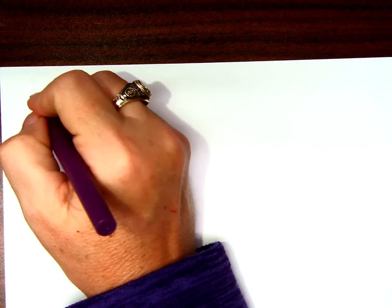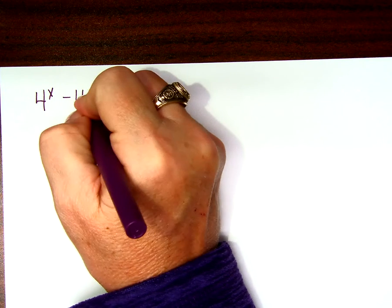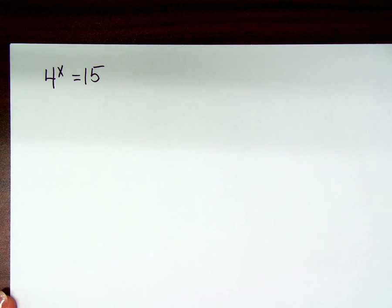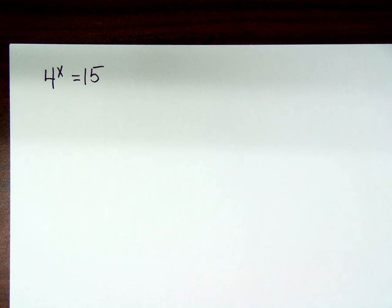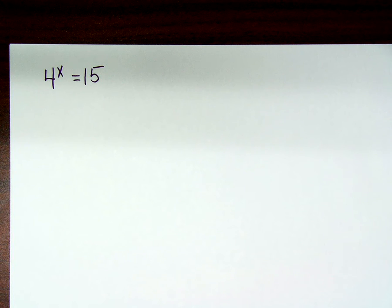Now we have equations like this: 4 to the x power equals 15. It starts to look like the problems we just did, except can I really make 15 be 4 to some power, or 2 to a power? I can't. So we have to figure out a different way to do it. What we want to do is take the log of both sides to solve this. We're going to use logarithms to solve exponential equations.